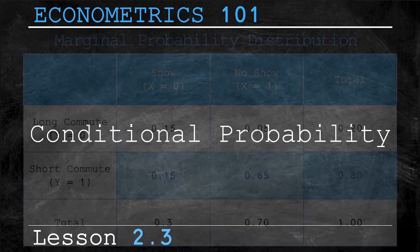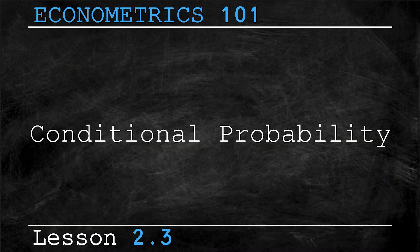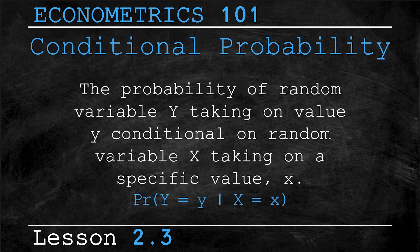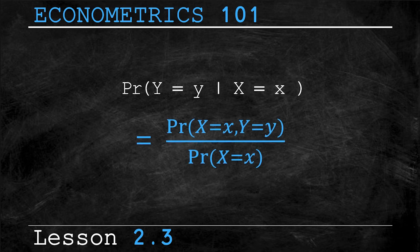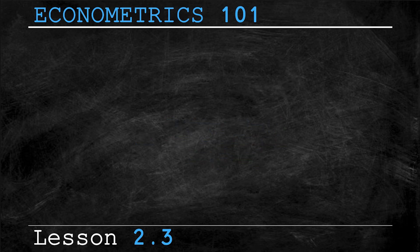Let's explore something more complicated known as conditional probability. Conditional probability is the probability of random variable uppercase Y taking on the value lowercase y, conditional on variable X taking on a specific value lowercase x. The formula is: the conditional probability of Y equaling lowercase y given X equals lowercase x is equal to their joint distribution divided by the marginal distribution of X equaling lowercase x. Let's hop into an example to make it clearer.